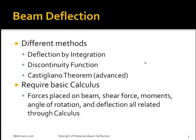There are several different methods that can be used to calculate beam deflection. The first is deflection by integration. The second is discontinuity functions. Both deflection by integration and discontinuity functions only consider the moment that is placed on the beam and how that would deflect the beam. The third listing is Castigliano's theorem, which is a lot more advanced than using deflection by integration and discontinuity functions.